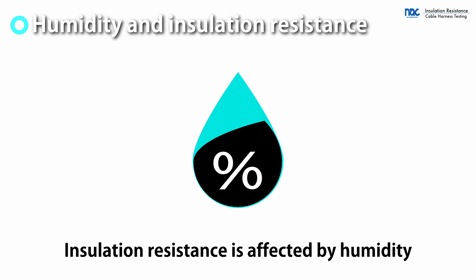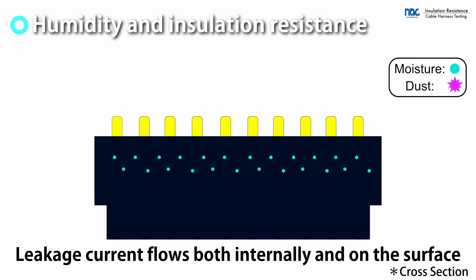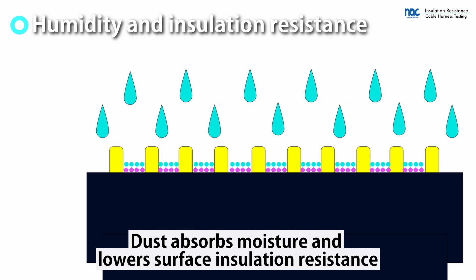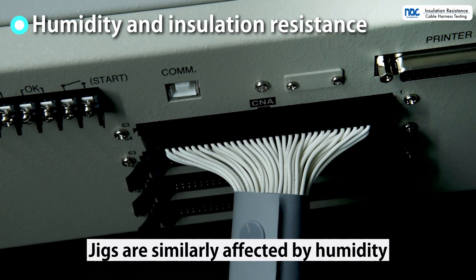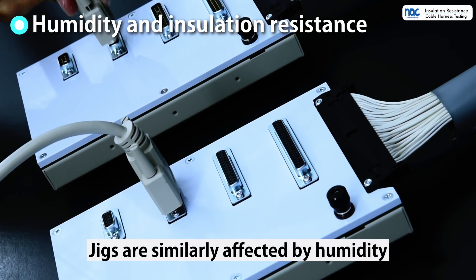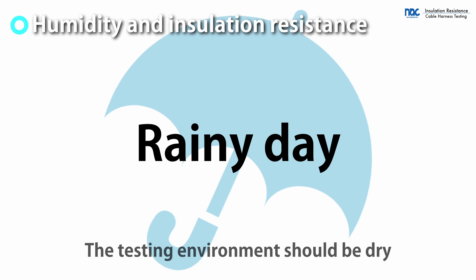Humidity is relevant in insulation resistance. Leakage current flows inside the insulator, but it also flows between conductors through the surface of the insulator. When the surface is dry and clean, the leakage current is low. However, if the surface is humid and dirty, the leakage current tends to flow more. This affects not only test targets, but the jigs as well. It is more likely to occur in seasons of high humidity or when it rains. A dry condition is always preferable for testing.